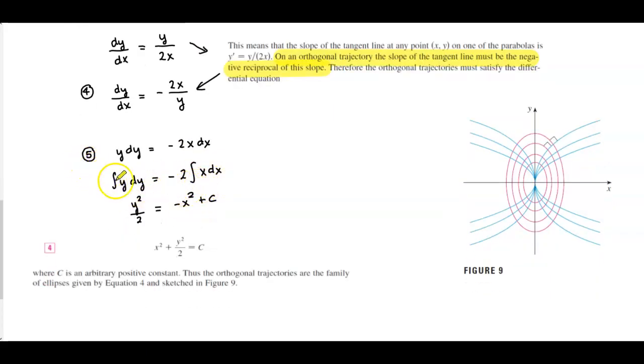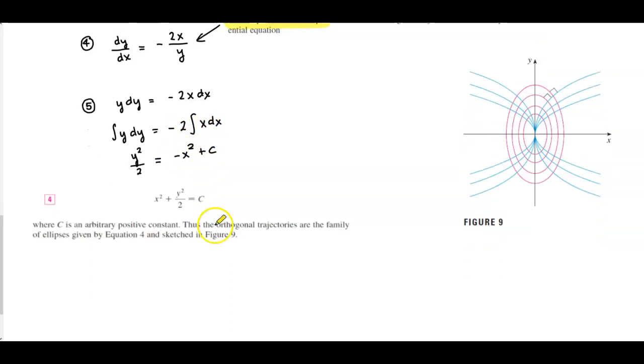To find the antiderivative, y is y squared over 2 which is equal to the antiderivative of x is one half x squared multiplied by the 2 just gives you negative x squared plus c. Therefore this is equation number 4: x squared plus y squared over 2 equals c where c is an arbitrary positive constant. The orthogonal trajectories are the family of the ellipses given by equation 4 and sketched in figure 9.